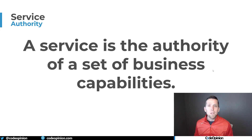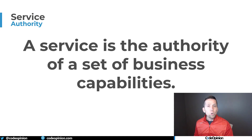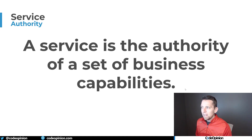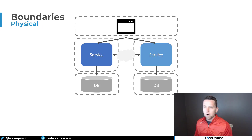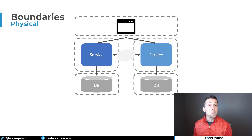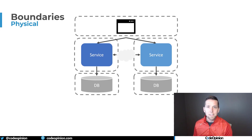For me, a service is the authority of a set of business capabilities, and behind that, the ownership of data for those capabilities. So looking back at this diagram, we see the data — that's the data that the service owns — and the service represents those capabilities. But what about the front-end? Why is it something separate? And that's where the confusion comes in, because we're treating physical and logical as the exact same thing, and they're not.